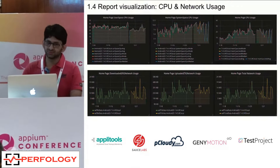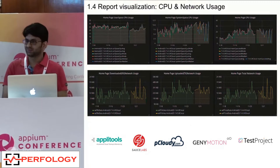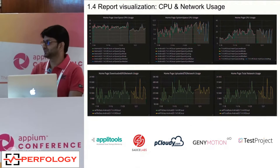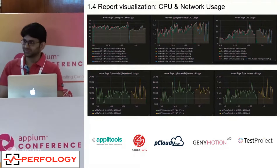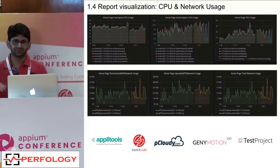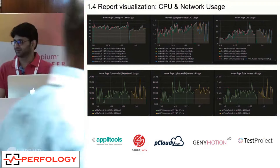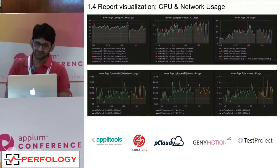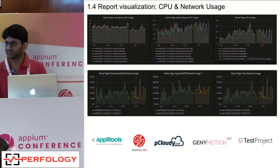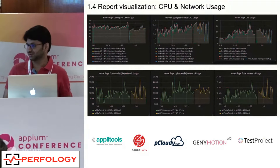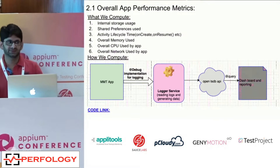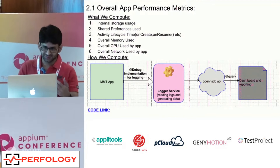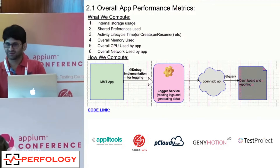This is the CPU representation, categorized into user space CPU and system space CPU. We capture the trend and calculate mean, mode, and median to understand the range of CPU usage for running a particular test case or scenario. For network data, we show how much data is downloaded, how much is transmitted, and the total network data used by the application at a particular point in time.